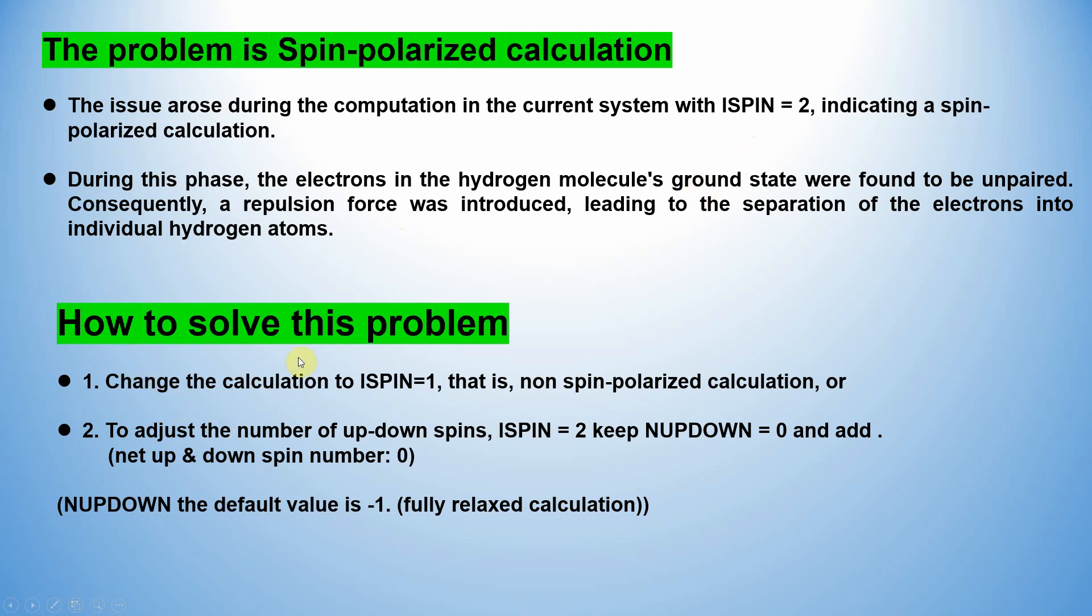How to solve this problem? To solve this problem, change the calculation to ISPIN=1, that is non-spin-polarized calculations. Or the second option is to adjust the number of up and down spins, that means in ISPIN=2, keep NUPDOWN=0.